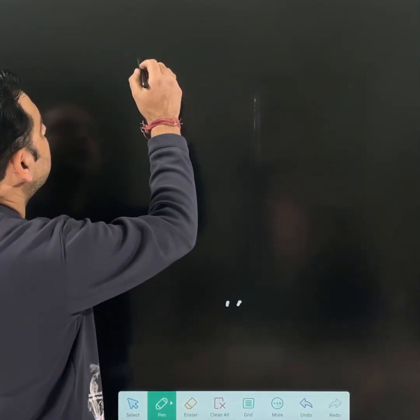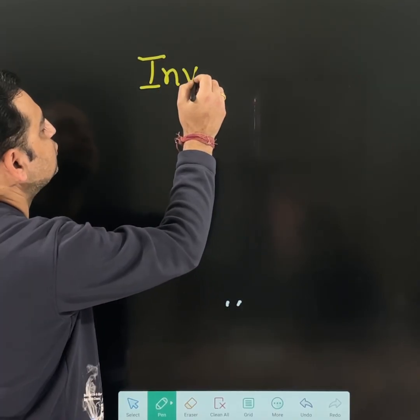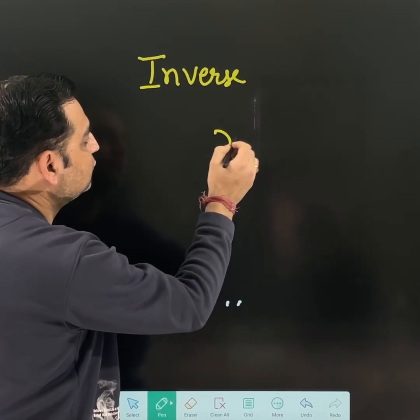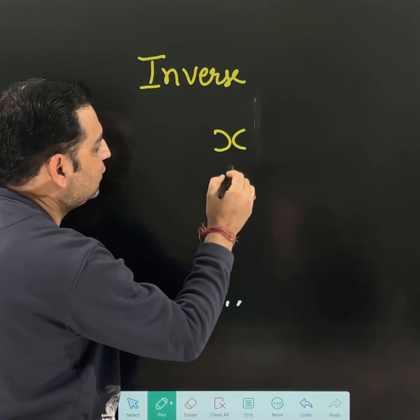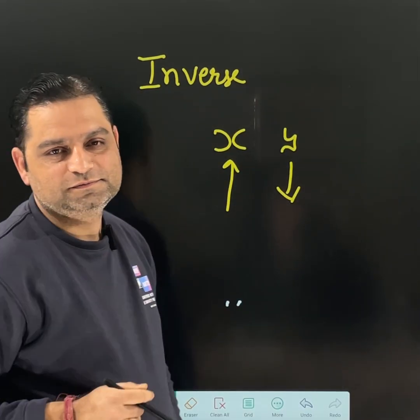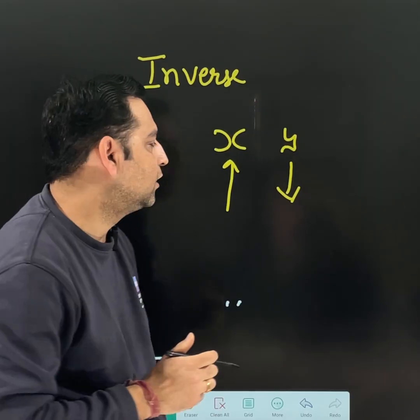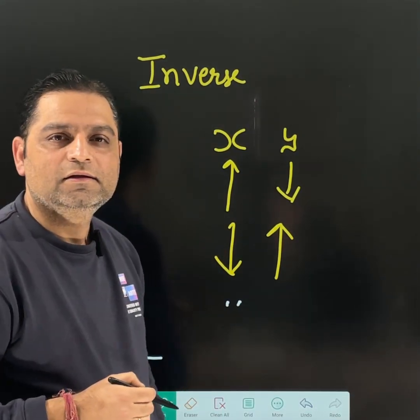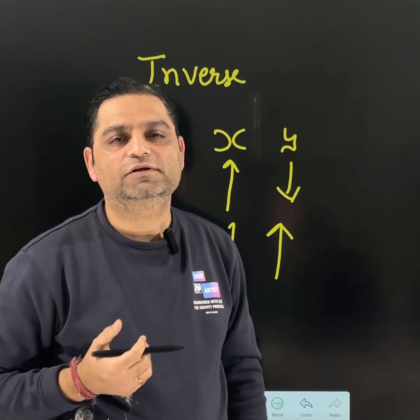This was an example of direct proportion — if one is increasing, the other is also increasing. But if I talk about inverse proportion, the reverse happens. If x is increasing, then y is going to decrease. And if x is decreasing, then y will increase.